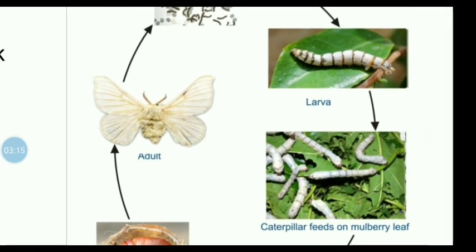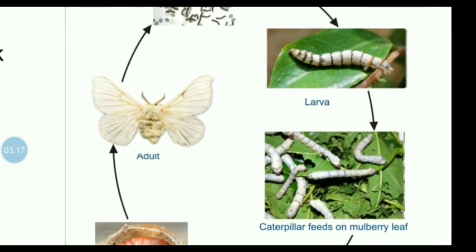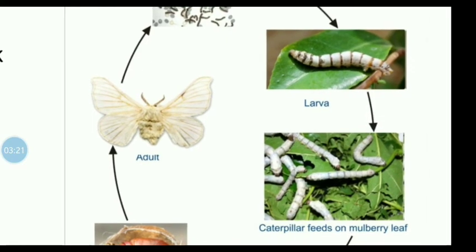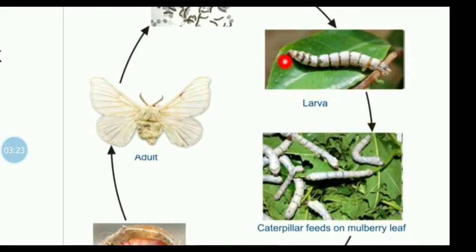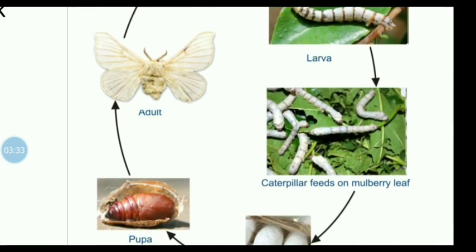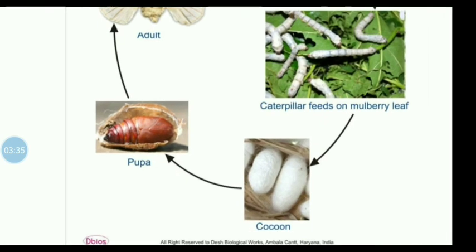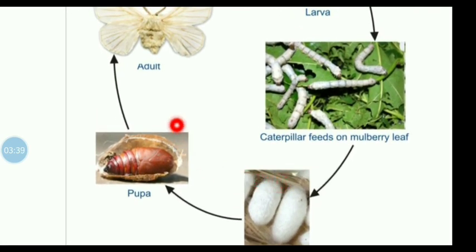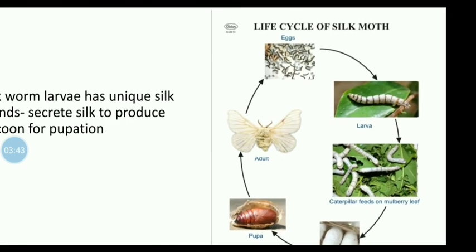The larvae feed on mulberry leaves. They have a special silk gland; the secretion from the silk gland hardens on contact with air to form silk threads, which are wound into a cocoon around the pupa.